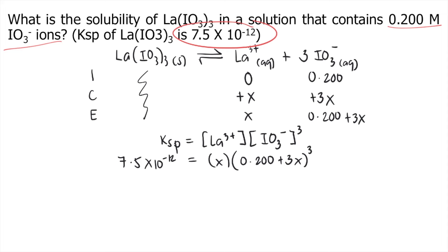Now, we use approximation to solve this problem easily. How do we do the approximation? You look at the Ksp value. As you can see, 7.5 times 10 to the negative 12 is a very small number, close to 0.